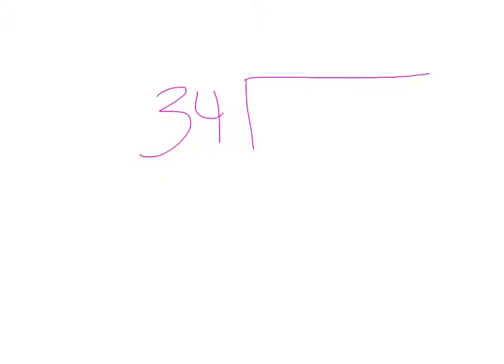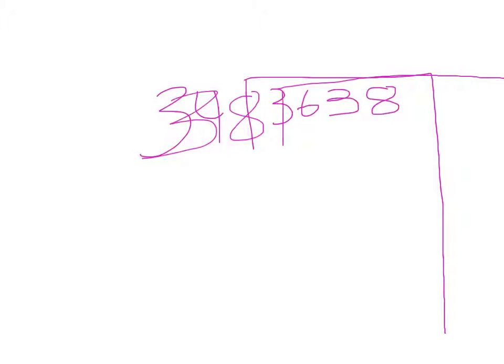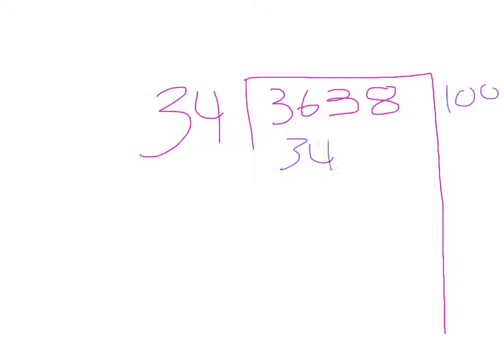So now we have to divide 34 into 3,638. I'm going to pick 100. 100 times 34 is 3,400.